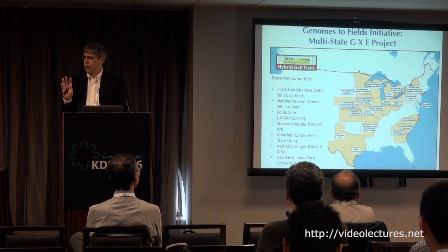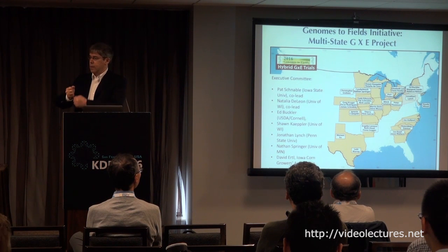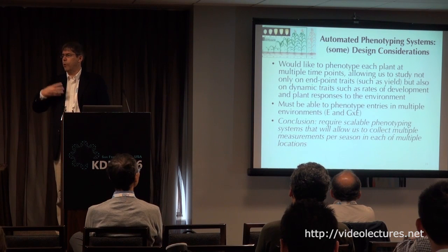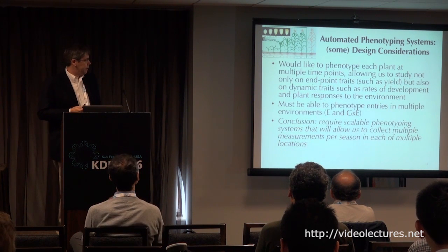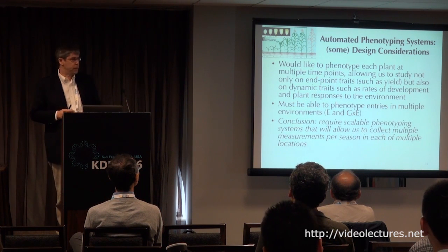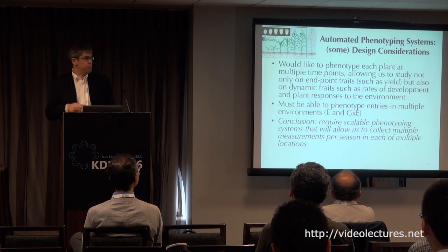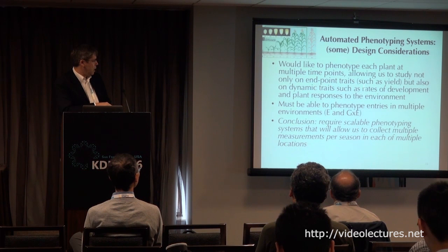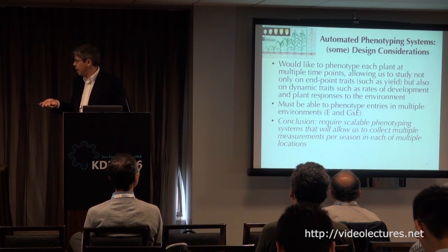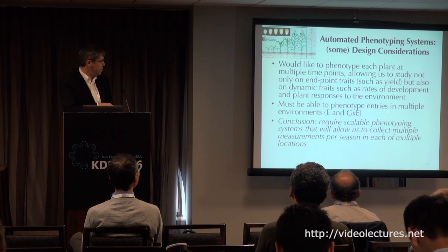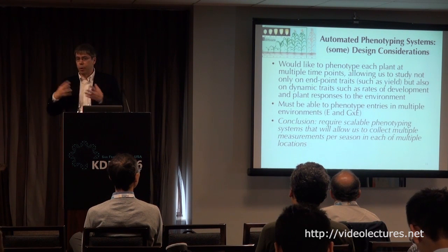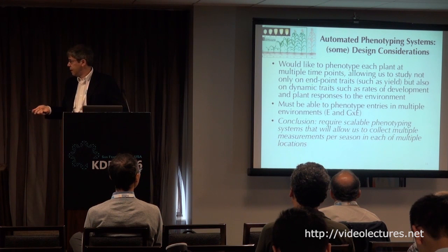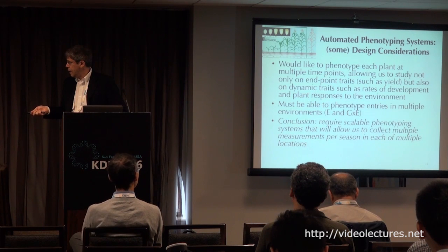Most phenotyping done on those plots to date has been traditional — yardsticks, calipers, and combines at the end of the season to get yield. We'd like to move forward with newer, more appropriate phenotyping systems. We would really like to phenotype plants at multiple time points during growth and development, not simply at an end point, to look at dynamic traits such as the rate of development and plant responses to the environment. Our conclusion was we need scalable phenotyping systems to collect multiple measurements per season and in each of multiple locations.